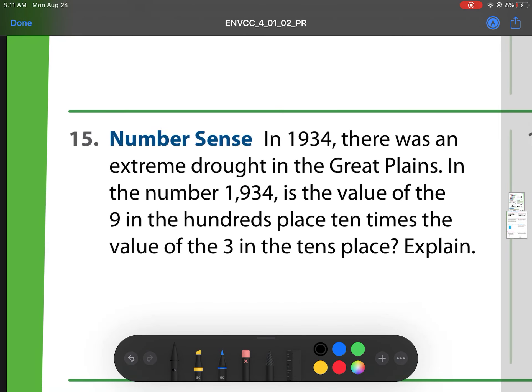Heading on to number 15. In 1934, there was an extreme drought. So drought means that there is no rain in the Great Plains. The problem states the place value of the 9 in the 100's place is 10 times the value of the 3 in the 10's. Let's check. Is this 900 ten times the place value of 3? Our answer is no. 900 is not 30 times 10. So we're going to modify it. No, 900 is not equal to 30 times 10.